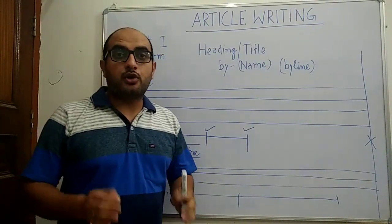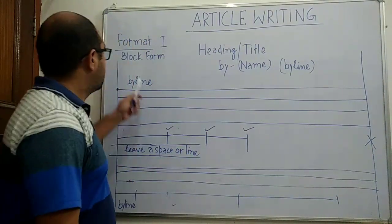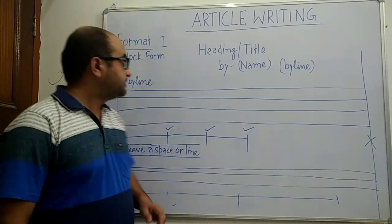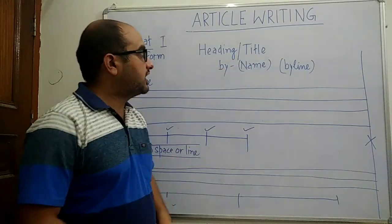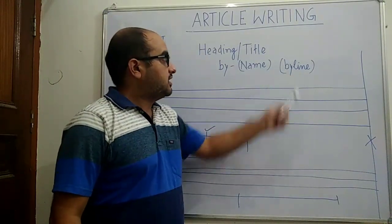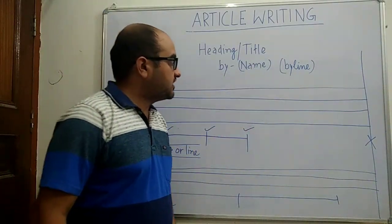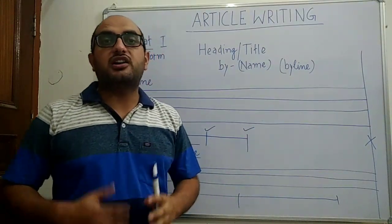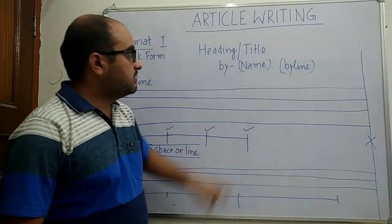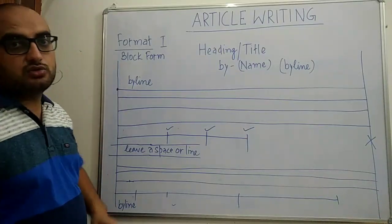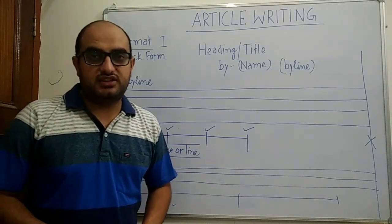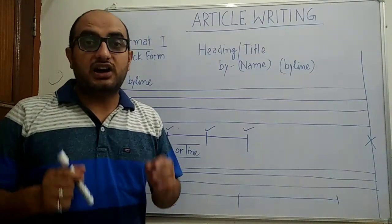Ab hum baat karte hain article writing ke format ki. Format number one, jo hum abhi discuss karenge, ye block form hoti hai. Isme sabse pehle heading ya title likha jata hai, aur use immediately follow kiya jata hai by-line se. By-line jo hai, woh humein writer ke baare mein batati hai jisne us article ko likha ho. Ye right side mein, center mein, ya left side mein bhi ho sakti hai.